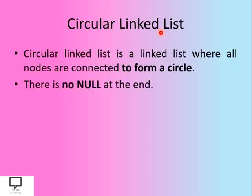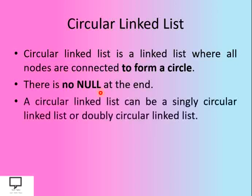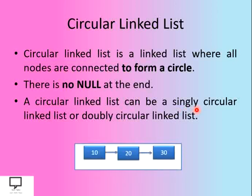There is no null at the end of the list because the null is replaced with the address of the first node to form a circle. A circular linked list can be a singly circular linked list or a doubly circular linked list. If it grows in a forward direction only, it is called a singly circular linked list. If it grows in both the forward and reverse direction, it is called a doubly circular linked list. In this video series we are focusing on singly circular linked list.